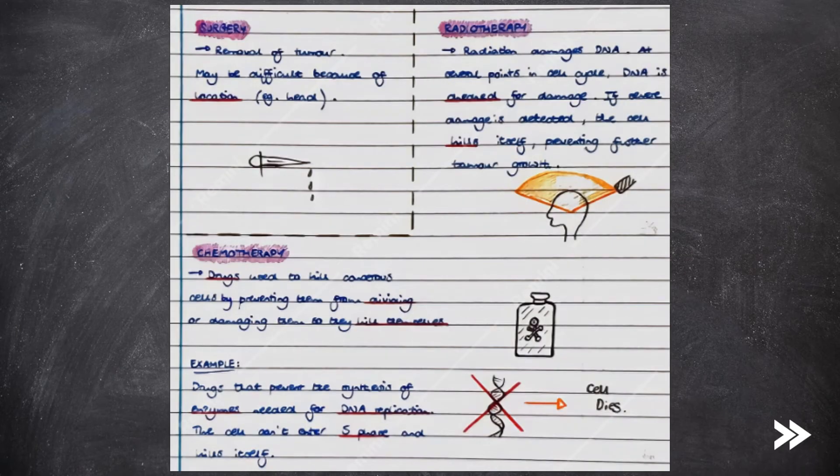We have three different types of cancer treatment: surgery, radiotherapy and chemotherapy. In surgery, the tumour is removed. However, this may be difficult because of the location, for example, if it is in the head.